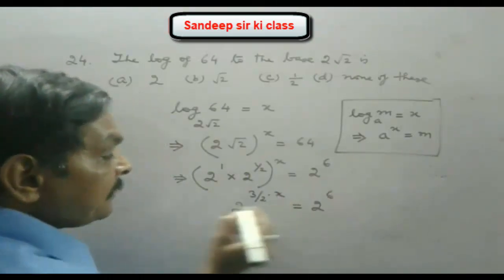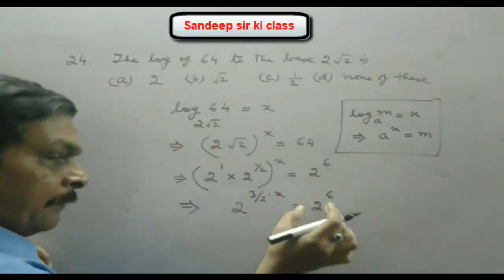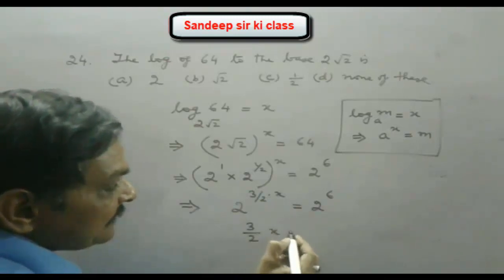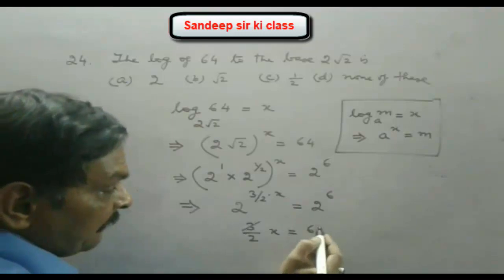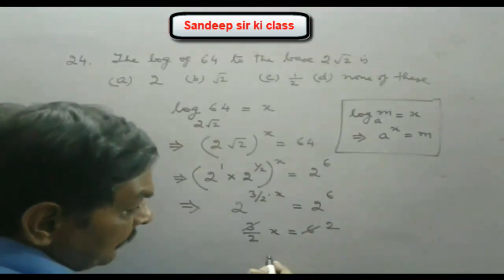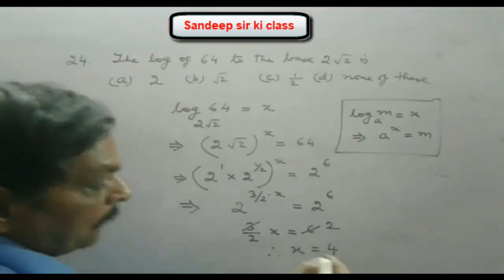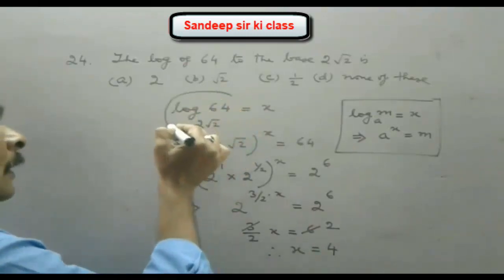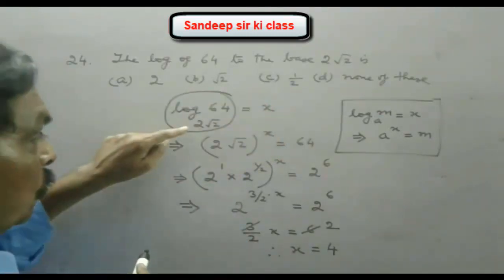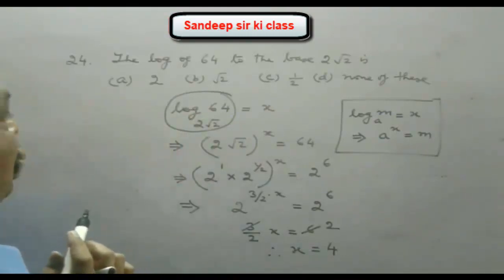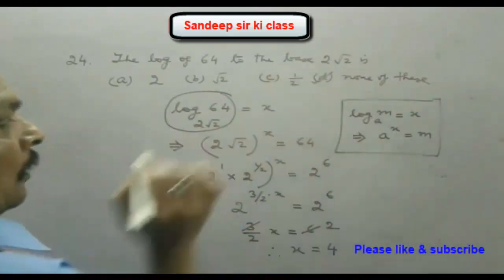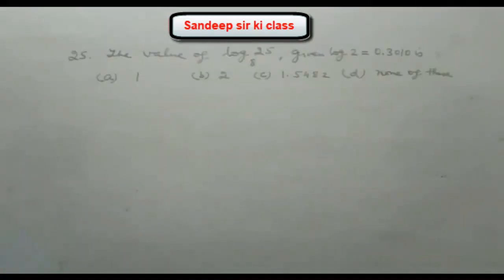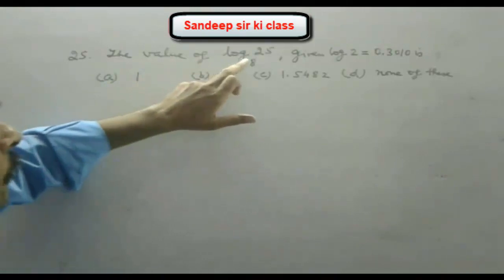On the right-hand side we have 2 raised to the power 6. Since both sides have the same base 2, the powers must be equal: (3/2)x = 6. Solving, 3 cancels into 6 twice, so x = 4. Hence the value of log 64 to the base 2√2 is 4, which corresponds to option D — none of these.